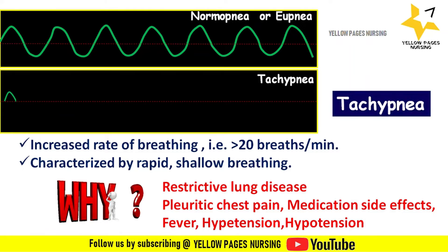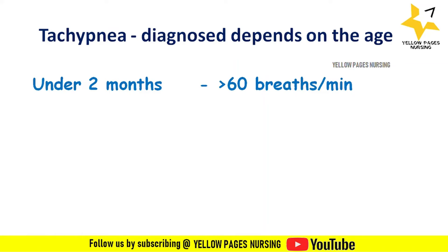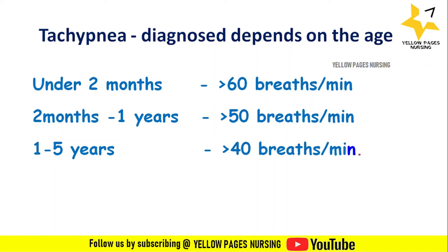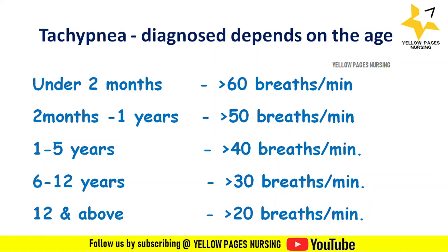Tachypnea diagnosis depends on age: under two months it is more than 60 breaths per minute; two months to one year, more than 50; one to five years, more than 40; six to 12 years, more than 30; and 12 years and above, more than 20 breaths per minute.